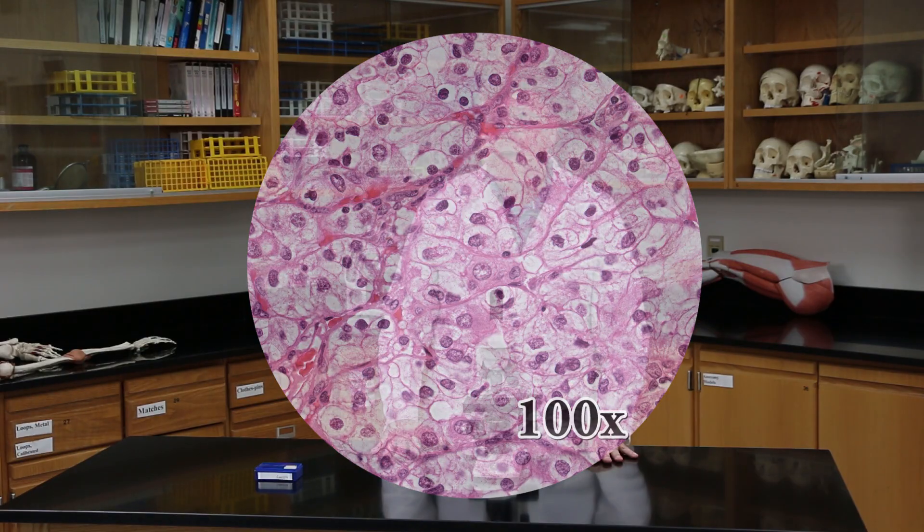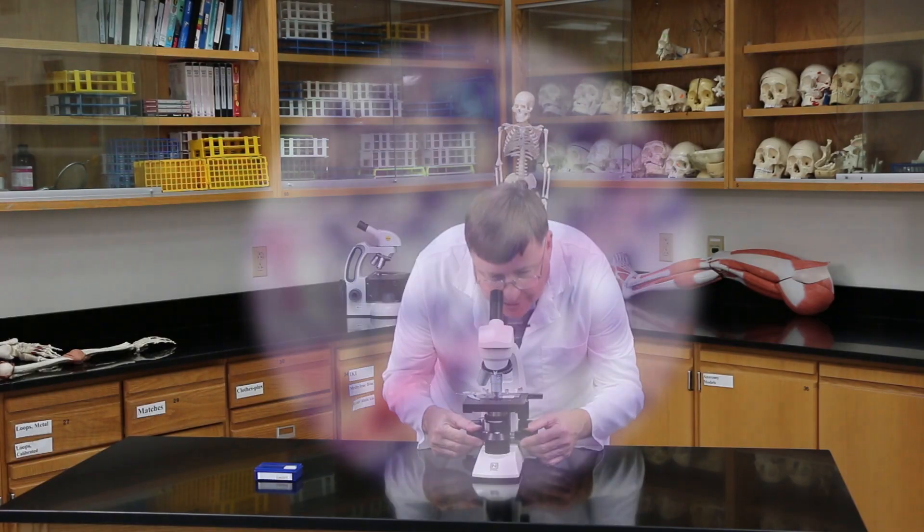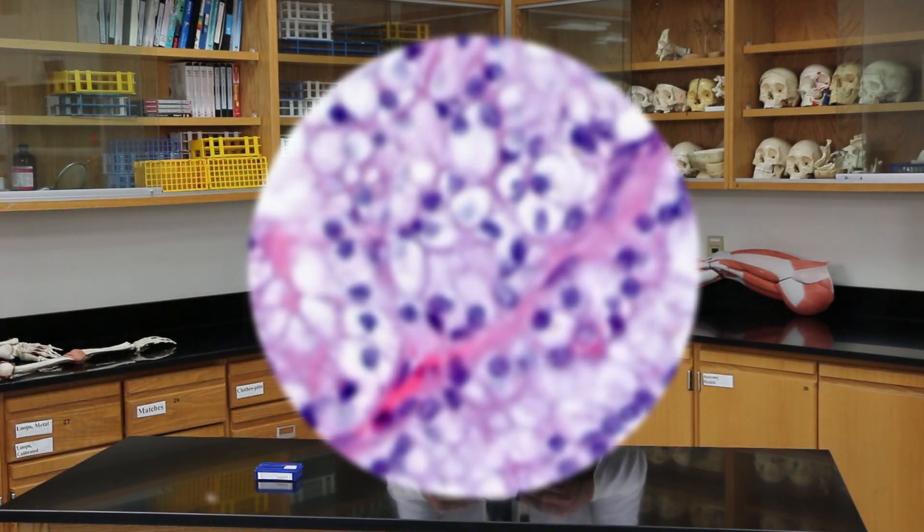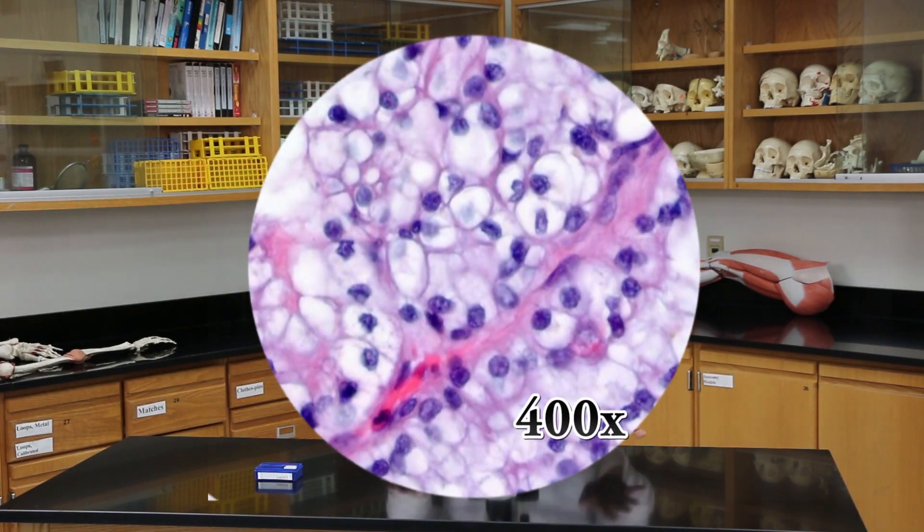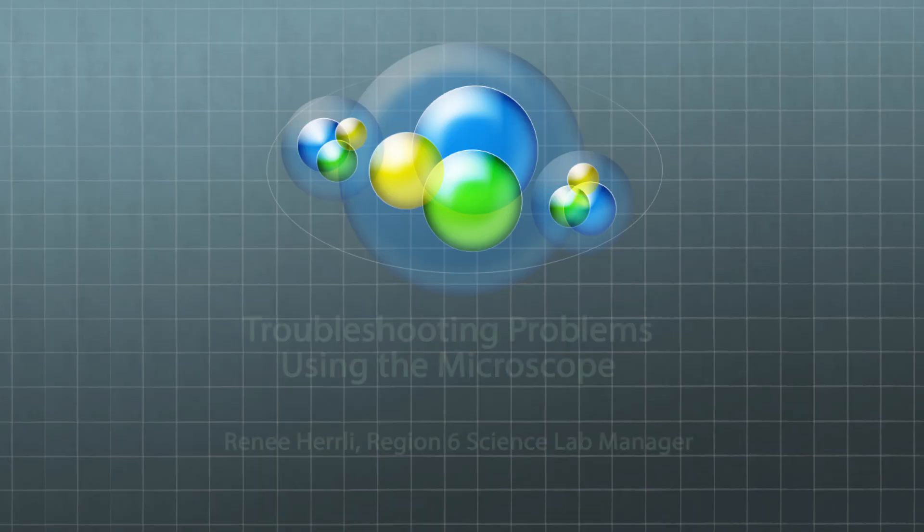And if I go to the high power lens, I'm going to turn the revolving nose piece and put the lens into place. And again, I'm going to use the fine focus. And now my image comes in the view. And that's basically how you use these microscopes.